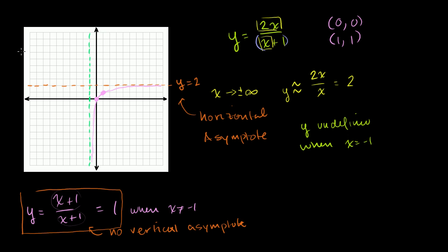The curve is going to approach negative infinity as it approaches the vertical asymptote from the right, then approach our horizontal asymptote from the negative direction. When x equals negative 2: 2 times negative 2 is negative 4, over negative 2 plus 1 which is negative 1, giving 4 — so the point (negative 2, 4) is on our curve. When x equals negative 3: 2 times negative 3 is negative 6, over negative 3 plus 1 which is negative 2, giving positive 3 — so (negative 3, 3) is also on the curve.